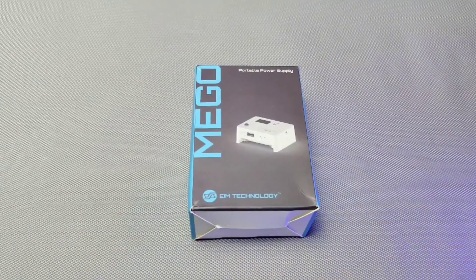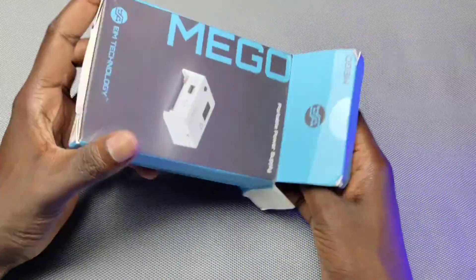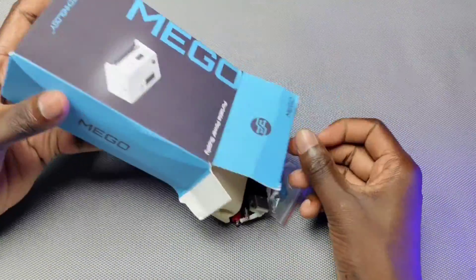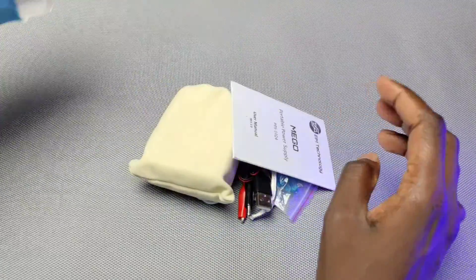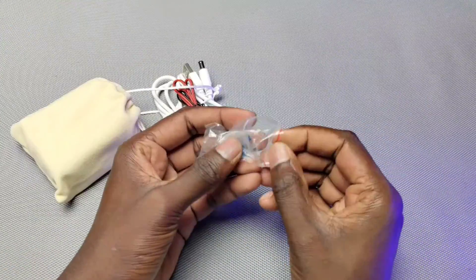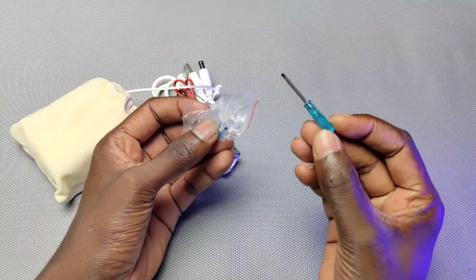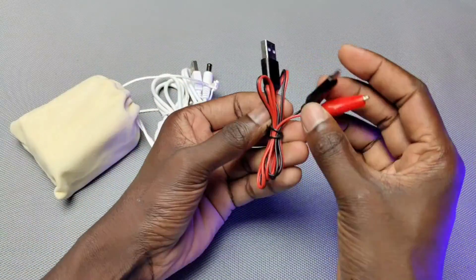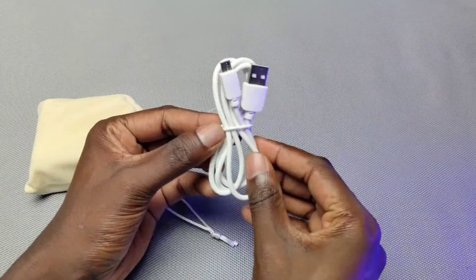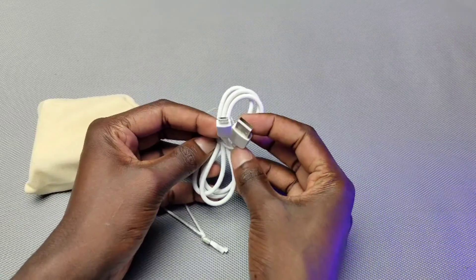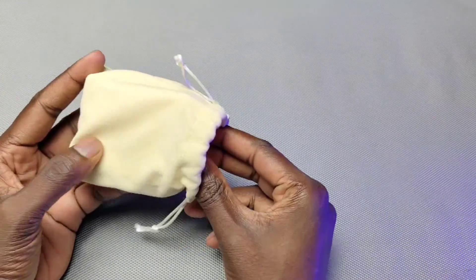So the Mego comes in this cardboard box. From that, we got a manual, three cute tiny screwdrivers, a USB cable with alligator clips, a USB cable with barrel jack, then another micro USB cable, and finally our power supply module in a small bag.